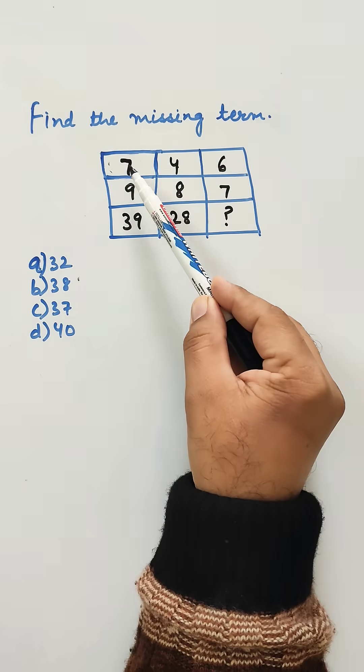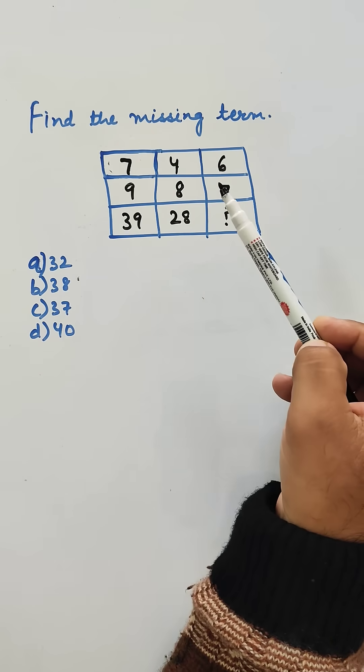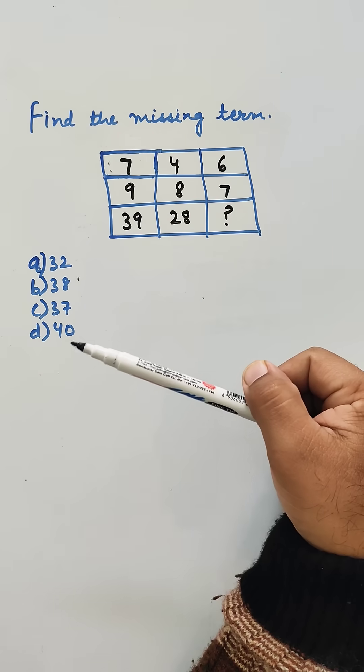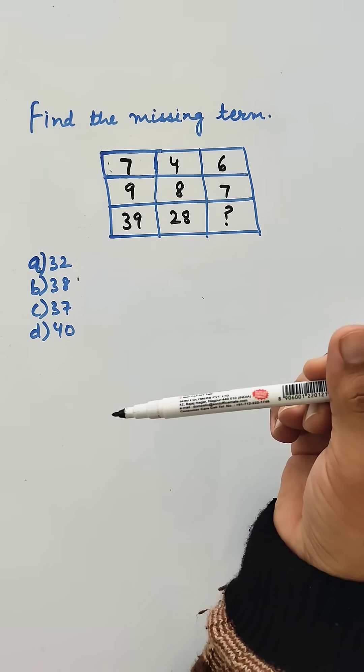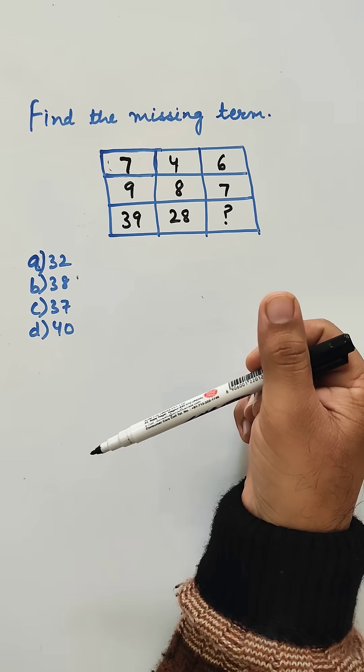Find the missing term: 7, 9, 39; 4, 8, 28; 6, 7, and we have to find this missing term. In this type of question, we have to apply the logic column-wise or row-wise.